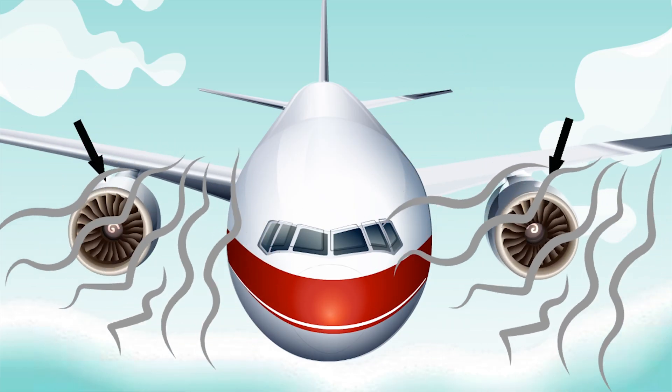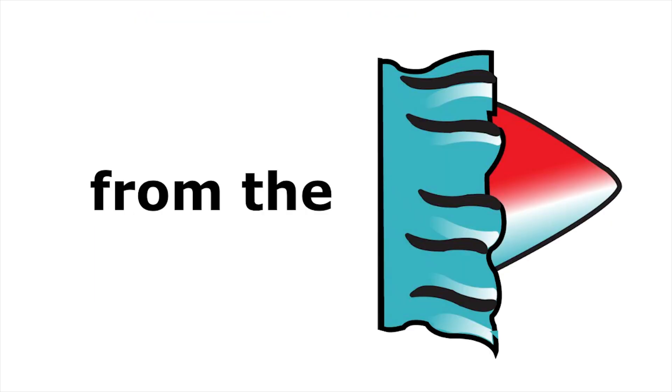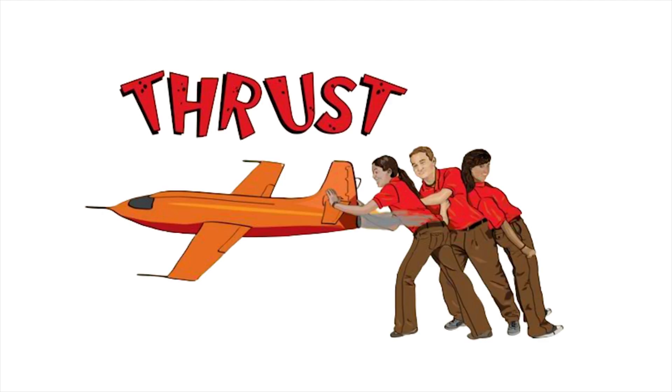As the fan spins, it draws massive amounts of air around the engine. That air is also forced through a narrowing engine housing at the rear of the engine before it meets the superheated air bursting out the exhaust. Together, the bypass and the blowout from the exhaust create a significantly higher thrust.